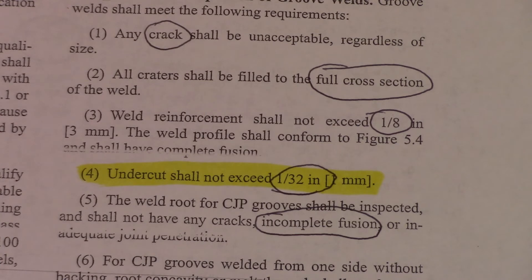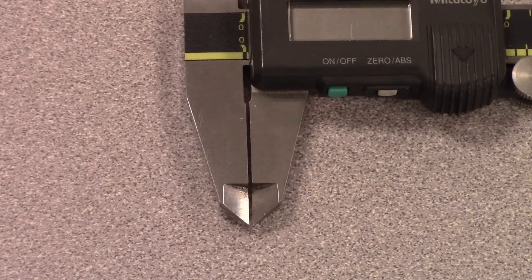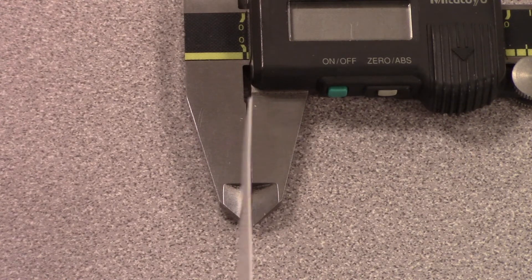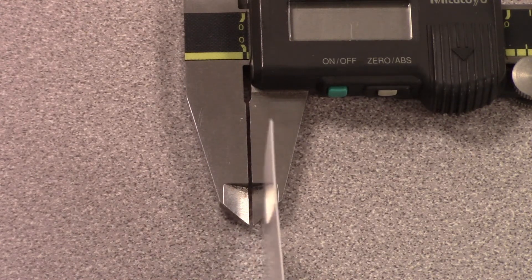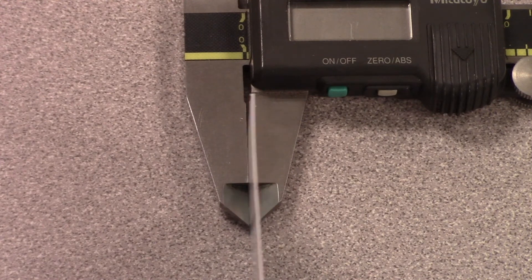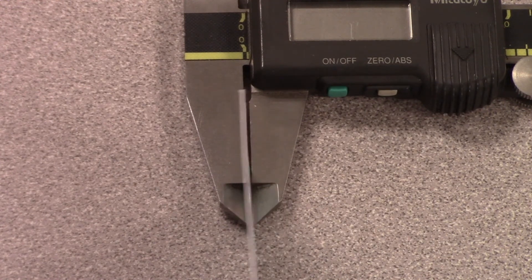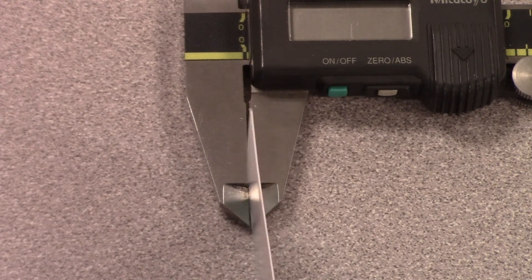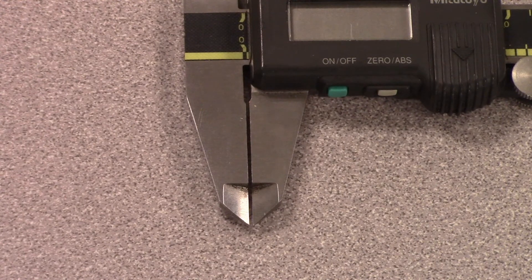How big is a 32nd of an inch? I'm going to pull out a caliper and show you exactly. This is a caliper opened up to a 32nd of an inch. This is a business card — I can't even get it in, it's so small. It's just barely bigger than a business card. So it's not very much.